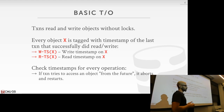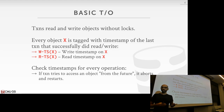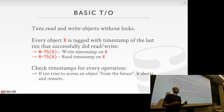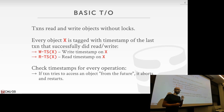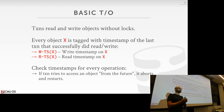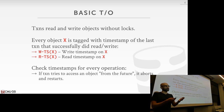With timestamp ordering schemes, transactions proceed reading and writing objects without acquiring locks. To make this possible, extra metadata must be added to all database objects — specifically two extra timestamps per tuple: a read timestamp representing the most recent transaction that read this item, and a write timestamp representing the most recent transaction that wrote to this tuple. A transaction checks these timestamps to verify it can perform operations.